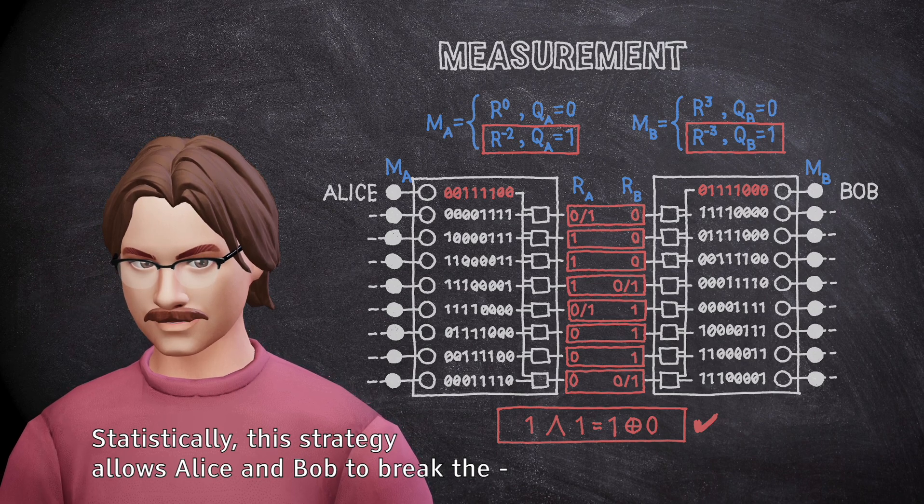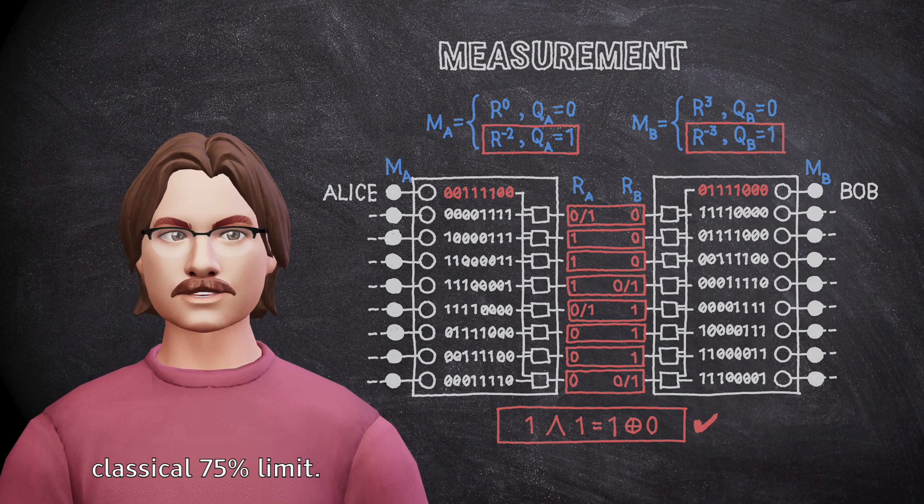Statistically, this strategy allows Alice and Bob to break the classical 75% limit.